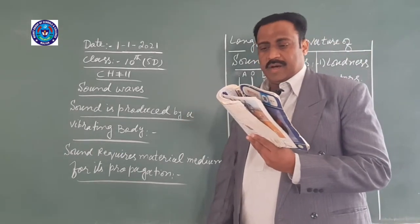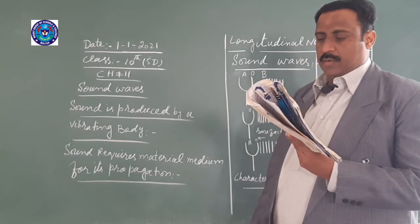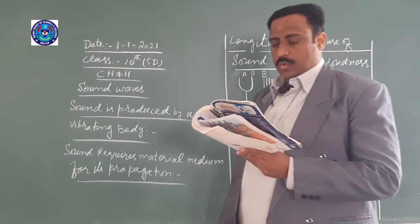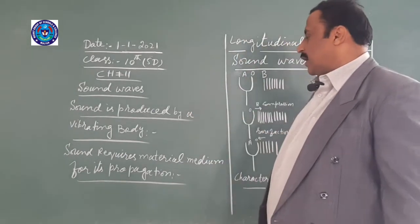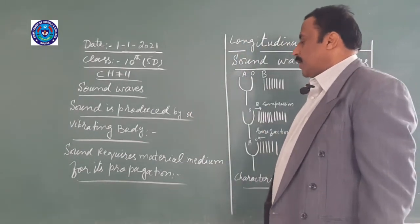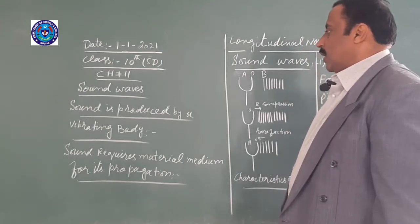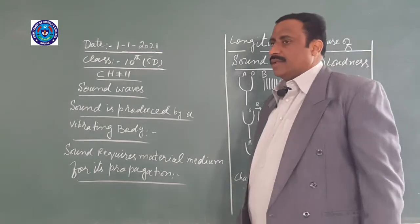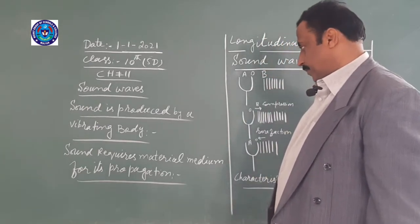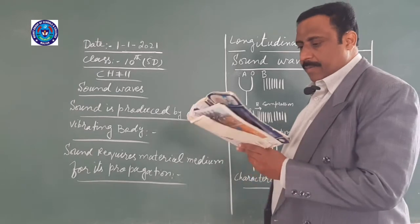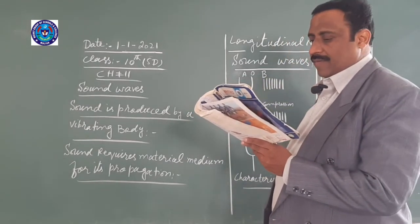All sounds are produced by the vibrations of objects. Sound is a form of energy that travels in the form of waves from one place to another. When any body vibrates, sound will be produced. For the production of sound, we have to vibrate the body. Our voice results from the vibration of our vocal cords.